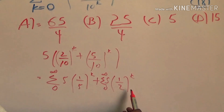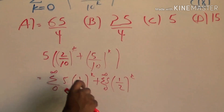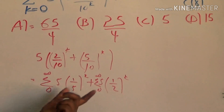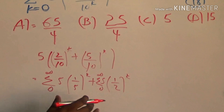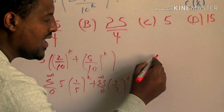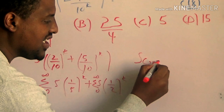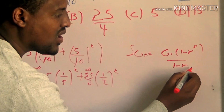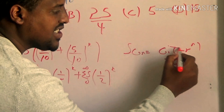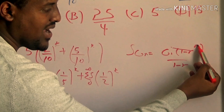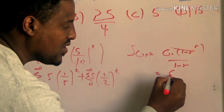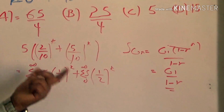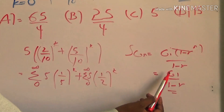The ratio of 1 over 5 and the ratio of 1 over 2 form geometric progressions. If the geometric progression is converging, the formula is Sj = G1 times (1 minus R to the power of N) over (1 minus R). As N approaches infinity, the converging formula simplifies to G1 over (1 minus R).